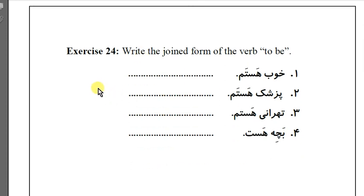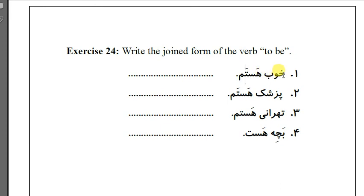Okay, next we have some exercises. Exercise number 24 — we need to write the joint form of these verbs. I'll do the first one for you and you can do the rest yourself. For number one, we remove the HAST part and it becomes KHOBAM — 'I'm good.'